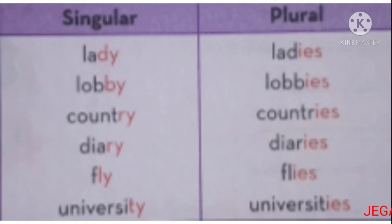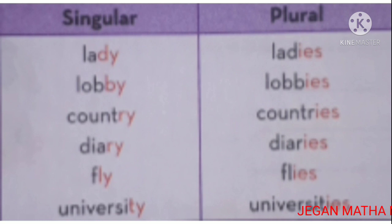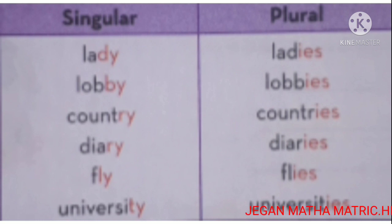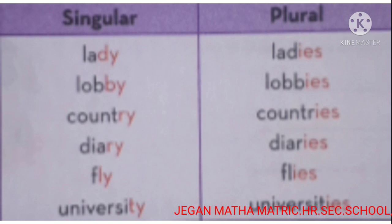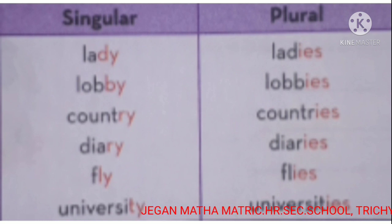Next, nouns that end with a consonant plus y — we replace the y with -ies to change into the plural. For example, in the word lady, d is a consonant and the next letter is y, so we replace y with ies: lady → ladies. Similarly: lobby → lobbies, diary → diaries, country → countries, university → universities.